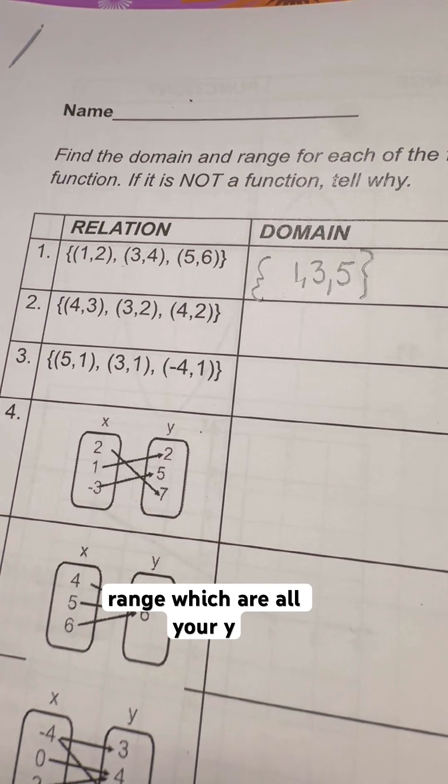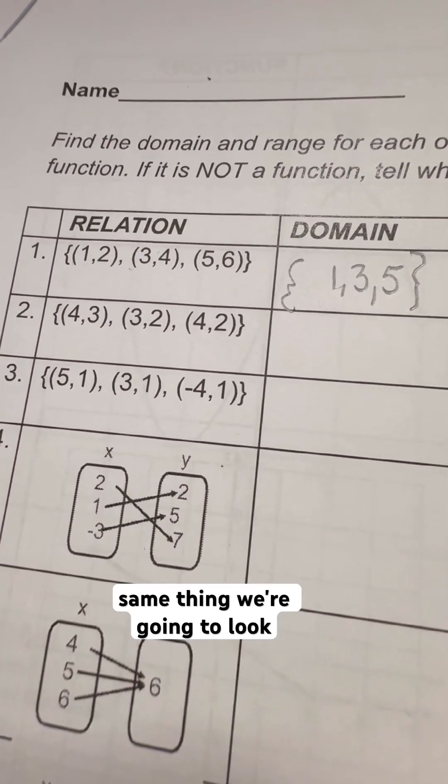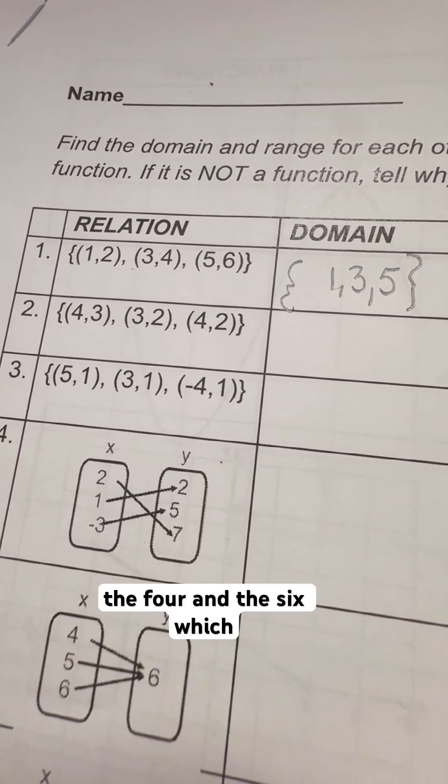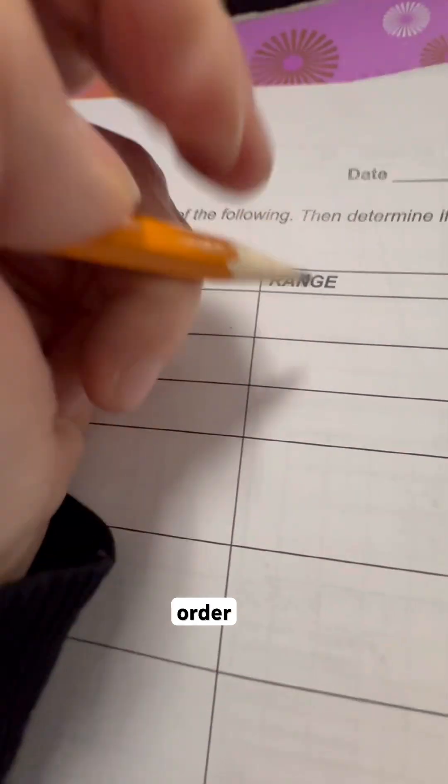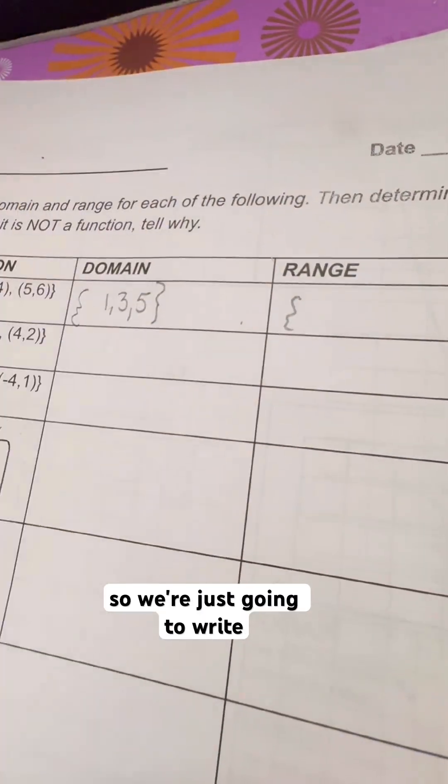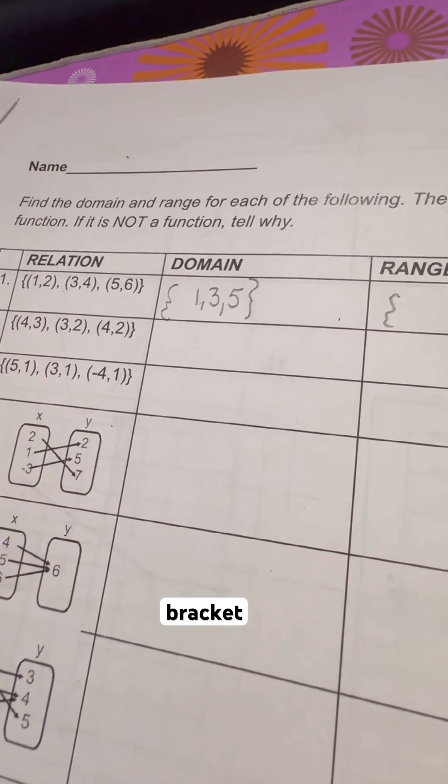Then we're going to do the range, which are all your y values. So same thing. We're going to look at the 2, the 4, and the 6, which happen to be already in order, least to greatest. So we're just going to write 2, 4, and 6. And that's all we're going to do for this one.